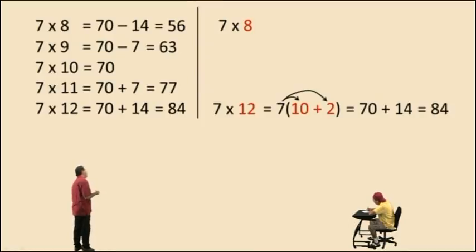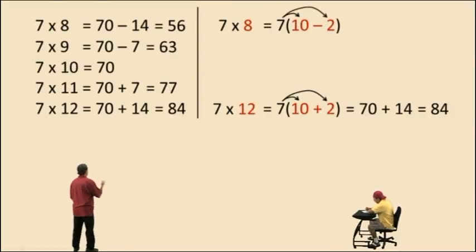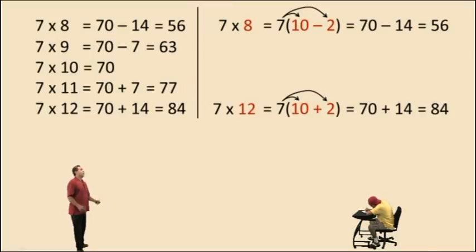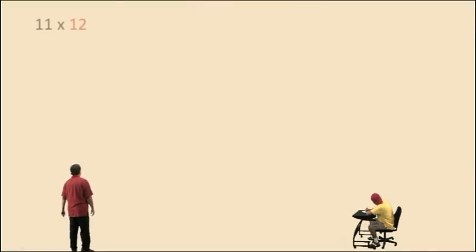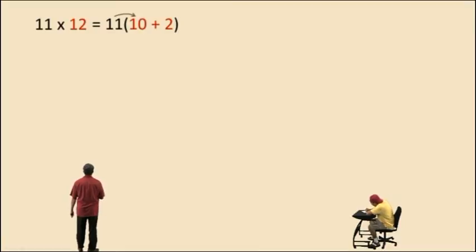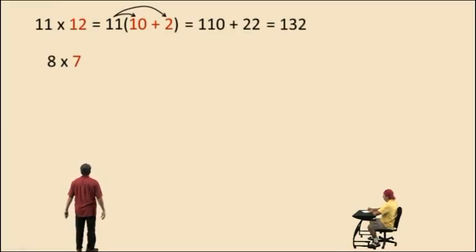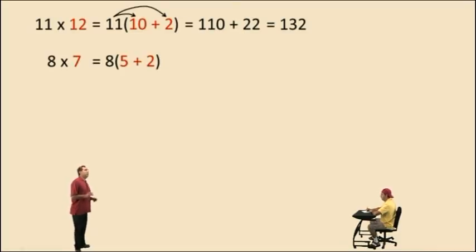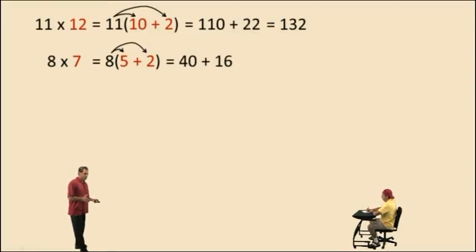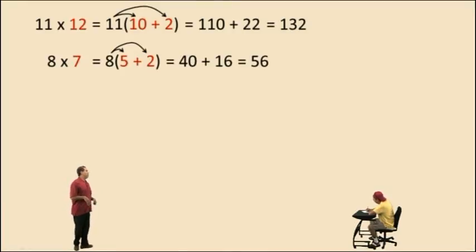Seven times eight — let's take the eight and rewrite it as ten subtract two. Ten subtract two is eight. Now let's distribute by multiplication: seven times ten subtract seven times two. That gives you seventy subtract fourteen, which is fifty-six — that is seven times eight. How about eleven times twelve, Charlie? Let's rewrite twelve in expanded form as ten plus two, and we do eleven times ten plus eleven times two, and that gives you one hundred ten plus twenty-two, which is one hundred thirty-two. If we did eight times seven, let's rewrite the seven as five plus two — most of us remember that eight times five is forty, and eight times two is sixteen, so we break it down into a little addition problem. That's kung-fu! It changes to forty plus sixteen, and that is fifty-six, which is eight times seven.